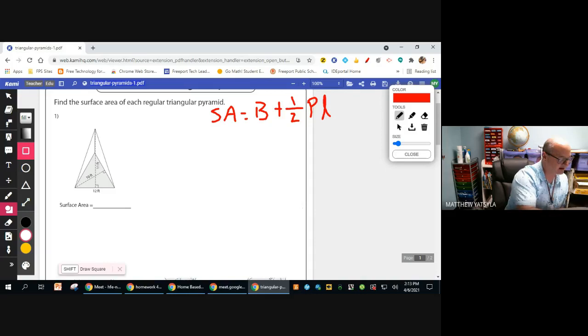Remember, that slant height is going to be the height of the lateral sides. So for our base in this case, since it's a triangle, it's going to be one-half base height of the base.